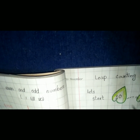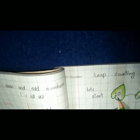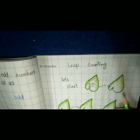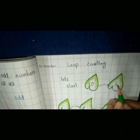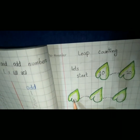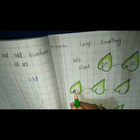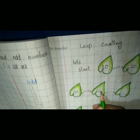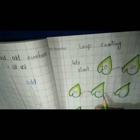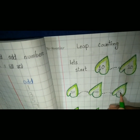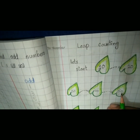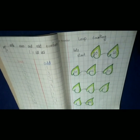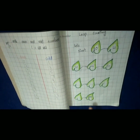Now there is 10, 20, 30, 40, 50, and so on — completed till 100. That is the leap counting by tens.